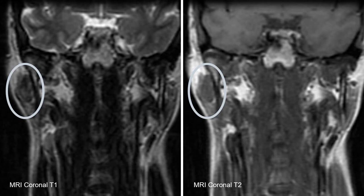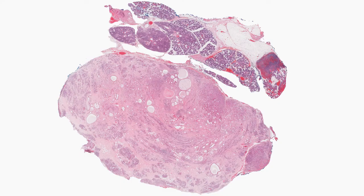On imaging, a very nice area of hypodense lesion is easily identified within the parotid gland parenchyma.